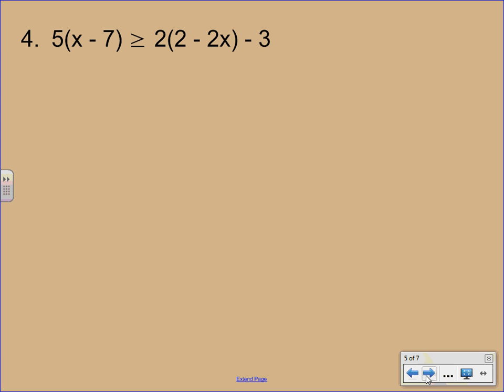Number 4. A lot of stuff going on here. We're going to start by simplifying both sides. So on the left hand side, we're going to distribute the 5. So we've got 5x minus 35. Bring down the inequality here. Distribute the 2, 4 minus 4x. And then bring down your minus 3.